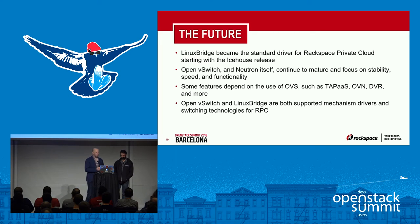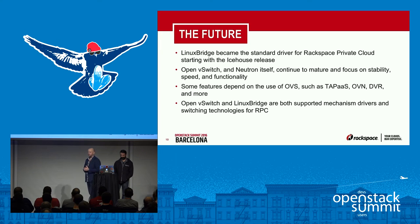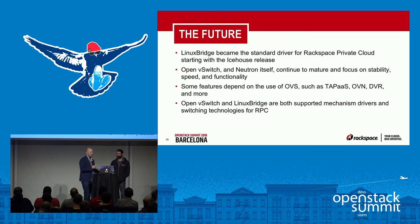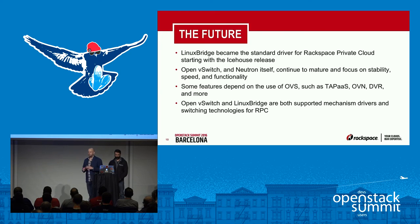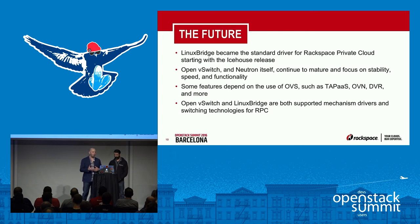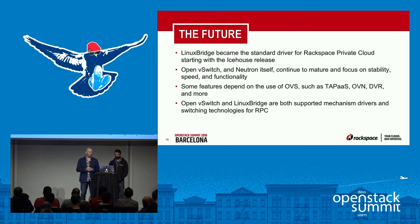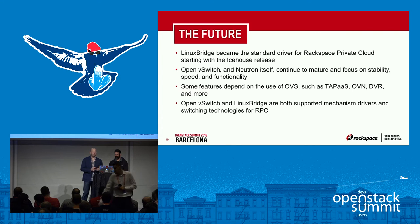From that experience, Linux bridge became the standard driver for our RPC release based on Ice House, and it continues to be our standard driver even though OVS is still an option in upstream OpenStack Ansible and will soon be adopted. Open vSwitch and Neutron have continued to mature, so many early issues aren't problems anymore. Features like Tap-as-a-Service or OVN distributed virtual routing are only available with OVS, so if those features are important to you, stick with that strategy. For us, we keep things simple and Linux bridge is a good option.